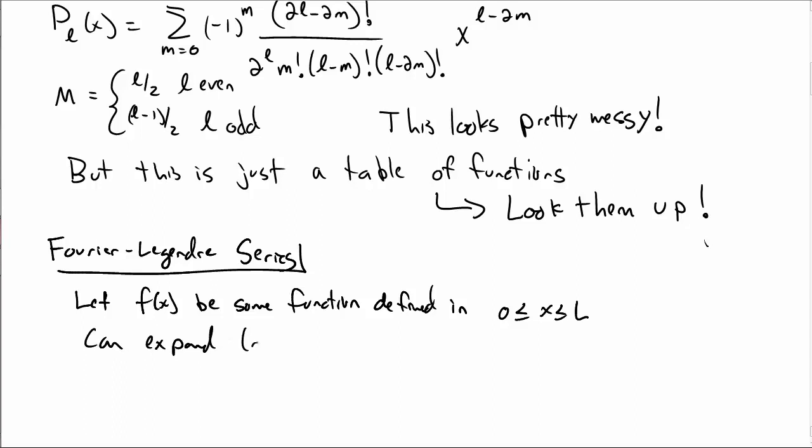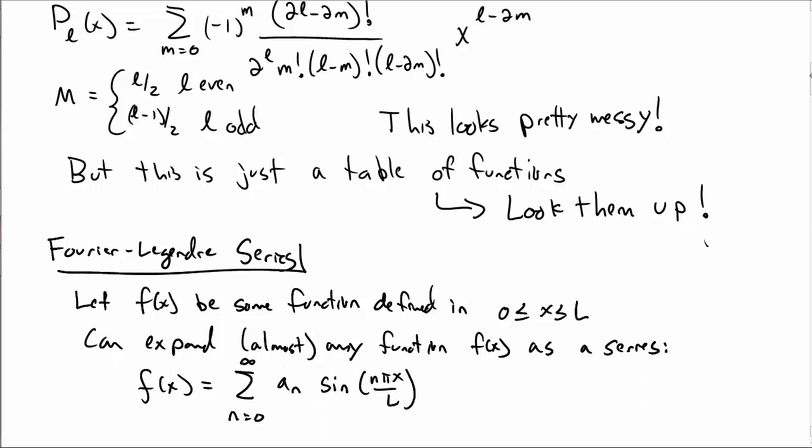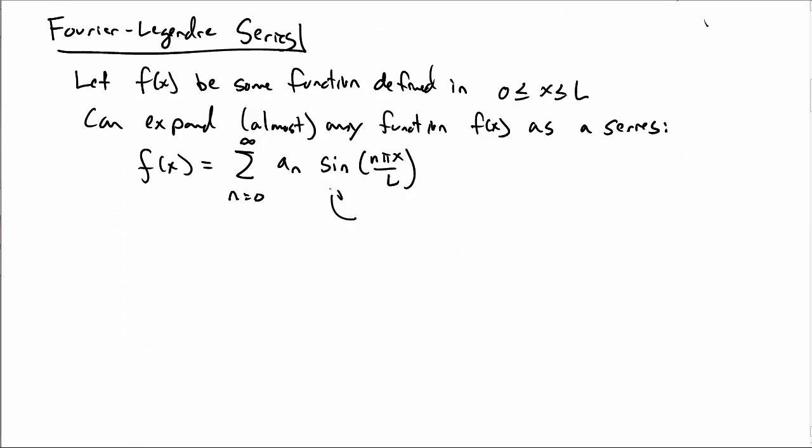So what we know from Fourier series is that we can expand almost any function as a series in signs in this region. So we can write f of x as the sum over some coefficients from n equal to 0 to infinity, a sub n sine of n pi x over l. So this is the usual Fourier series. And this expansion gives us a function, or gives us the function, in the region between 0 and l.